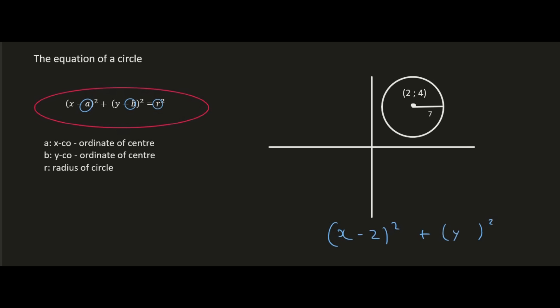The y value center is 4, but we always use the opposite, and then the radius is 7. But this is where I've seen a lot of mistakes—this part of the formula is supposed to say radius squared, so it's 7 squared which is 49. So that is the equation of that circle.